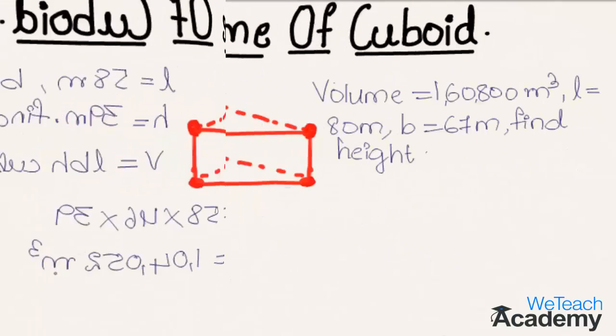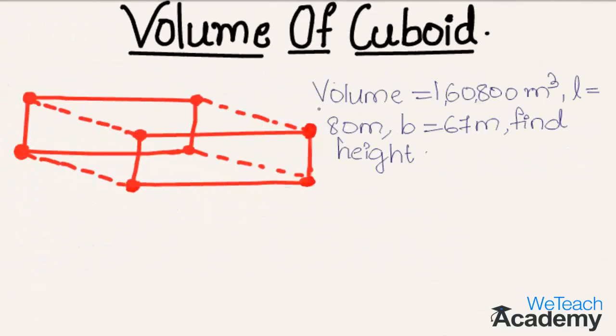Coming to the next example: volume of a cuboid is given as 160,800 meters cube, length equals 80 meters, and breadth equals 67 meters. Find the height.